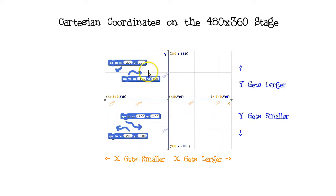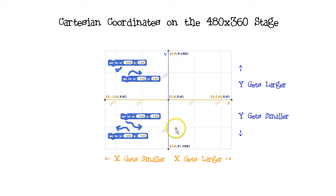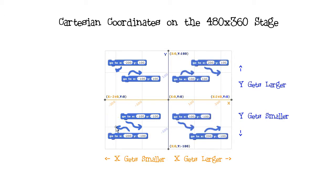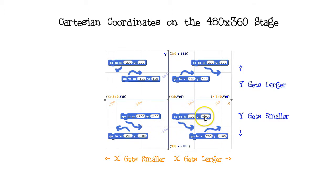Negative x-values are on the left side of the stage. GoTo minus 200, 100. GoTo 100, 100. GoTo minus 100, minus 100. GoTo minus 200, minus 100. Looking at the x-values, I have x is minus 200, x is minus 100, x is 100, and x is 200. And the y-values: y is minus 100 for all four of these, and y is positive 100 for these four.